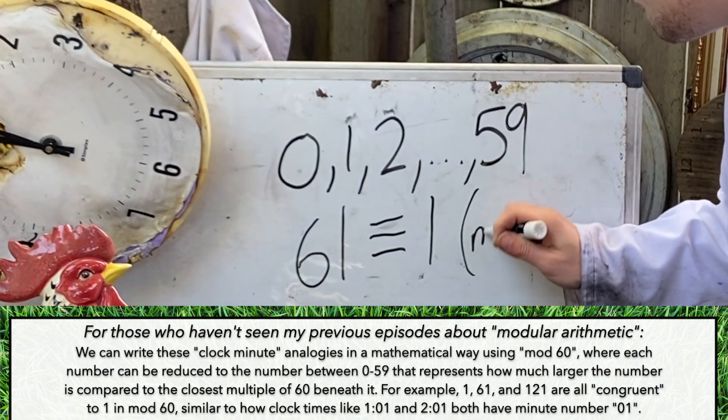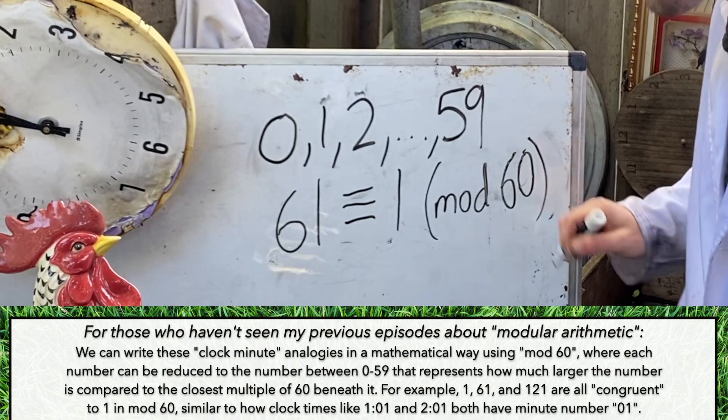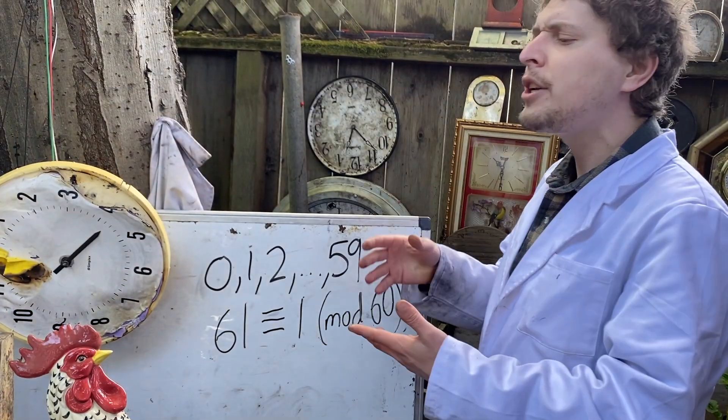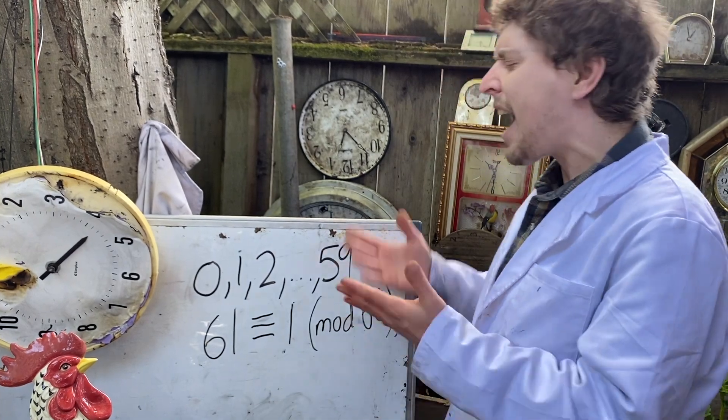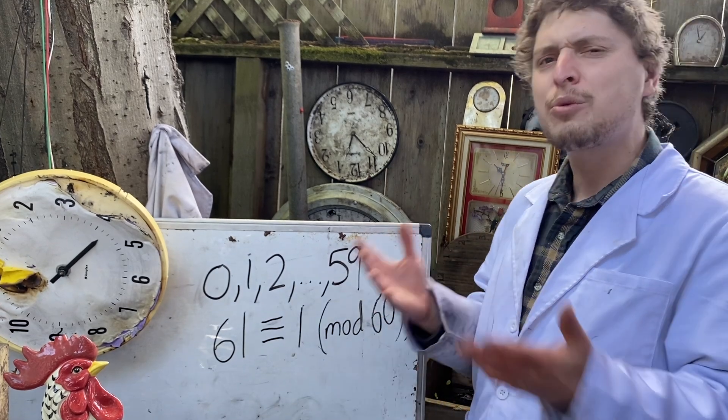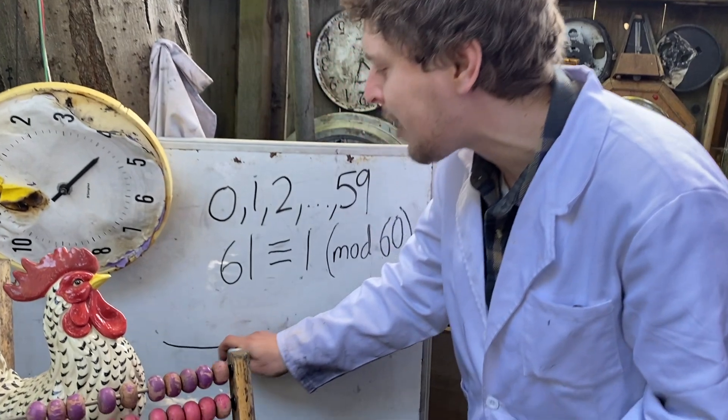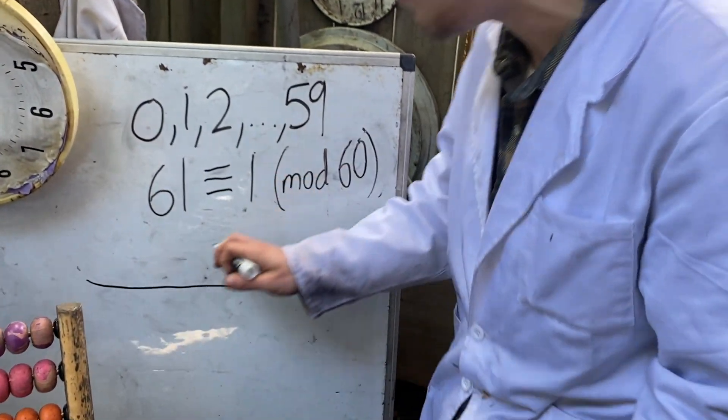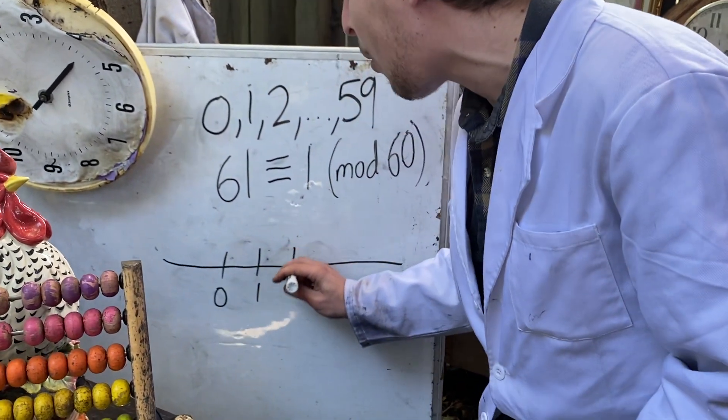So how could we do operations like division using these, and how did 1 divided by 7 supposedly give us 43? Well, we're going to need to flashback to a type of numbers you're probably more familiar with, the non-negative integers, often called the whole numbers.